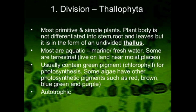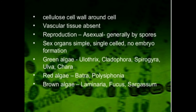Thallophyta have an autotrophic mode of nutrition — they make their own food, so they are called autotrophs. They also have a cell wall composed of cellulose.